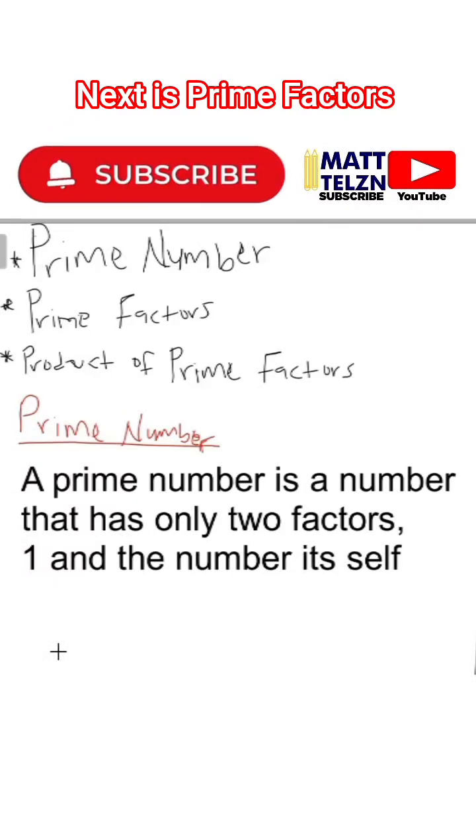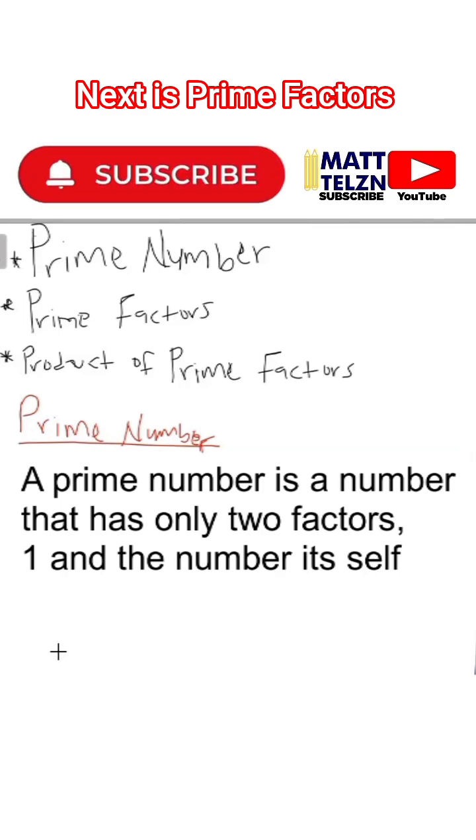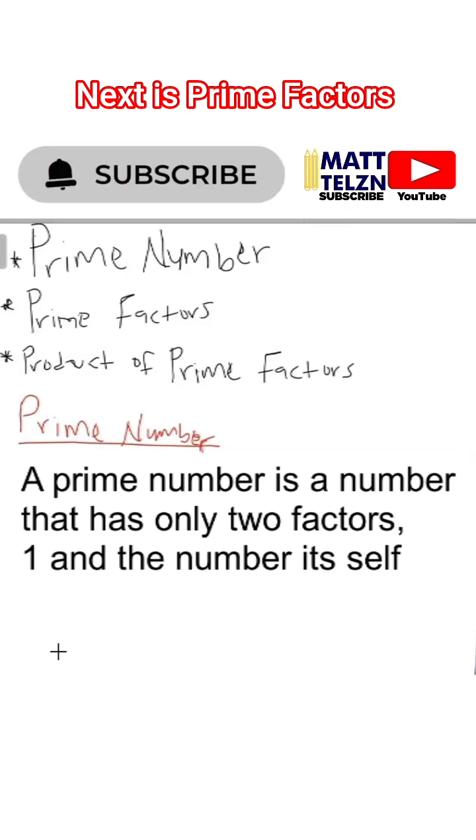A prime number is a number that has only two factors. What are the factors? One and the number itself. Such kind of numbers are known as prime numbers.